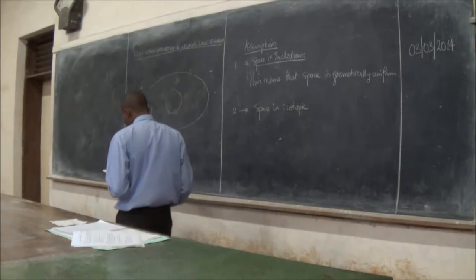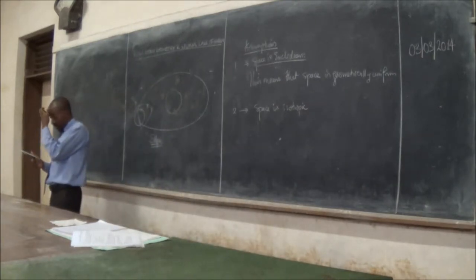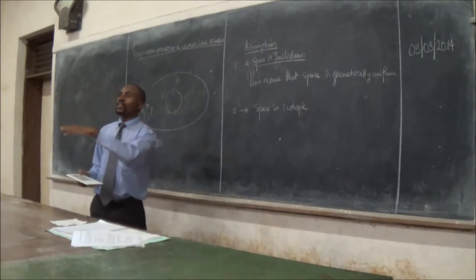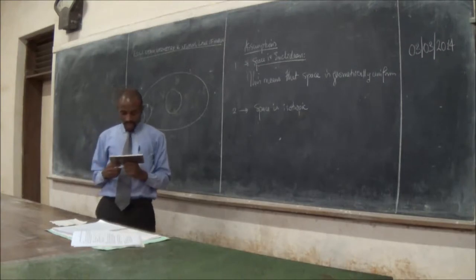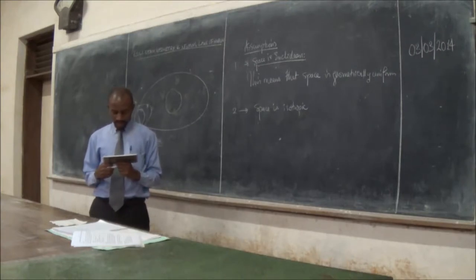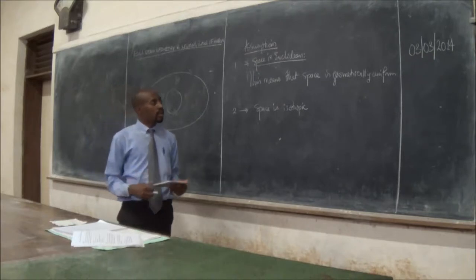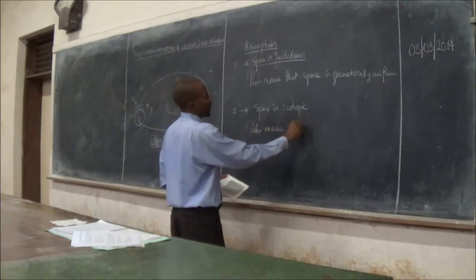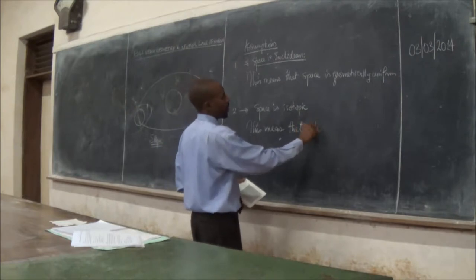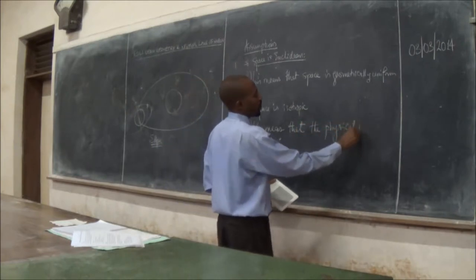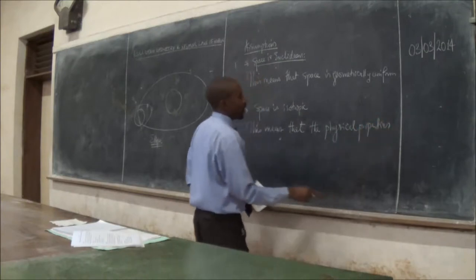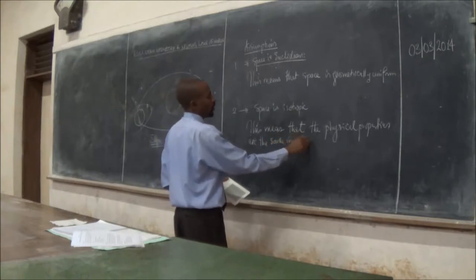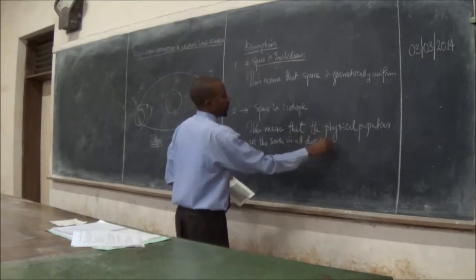The other one is that space is isotropic. Those of you who are doing physics, you learn about isotropy. When the material is isotropic, it means that these properties are the same in all directions. And this is because the physical properties are the same. This means that the physical properties are the same in all directions.